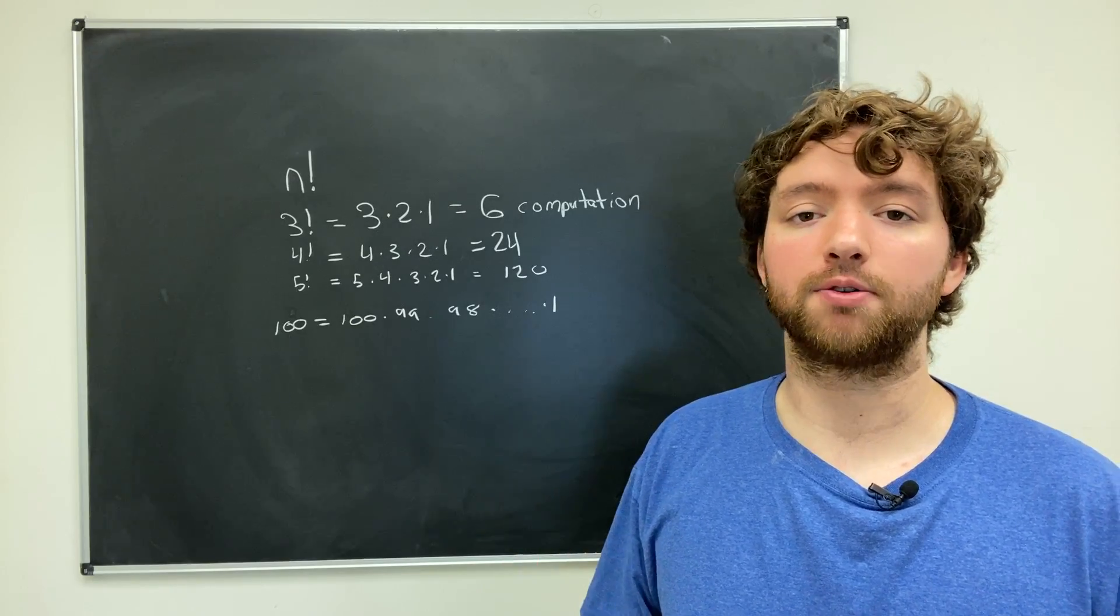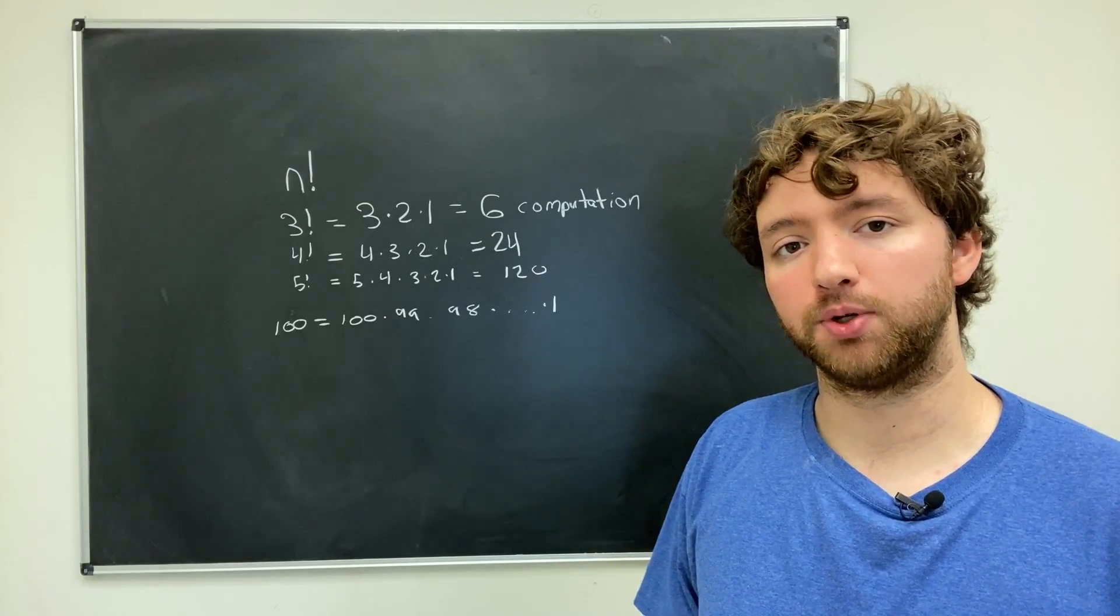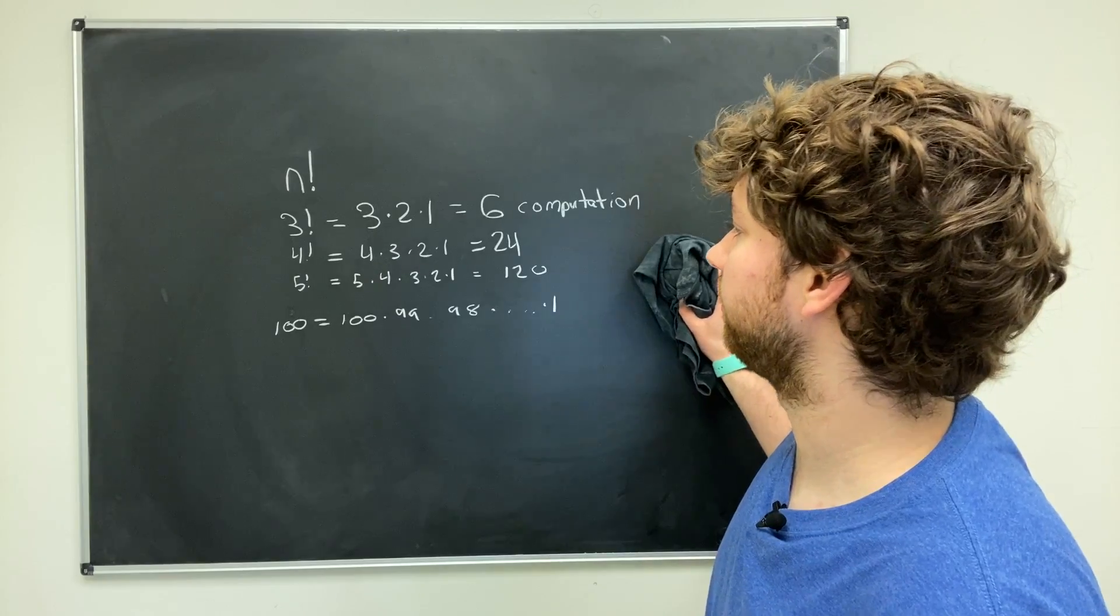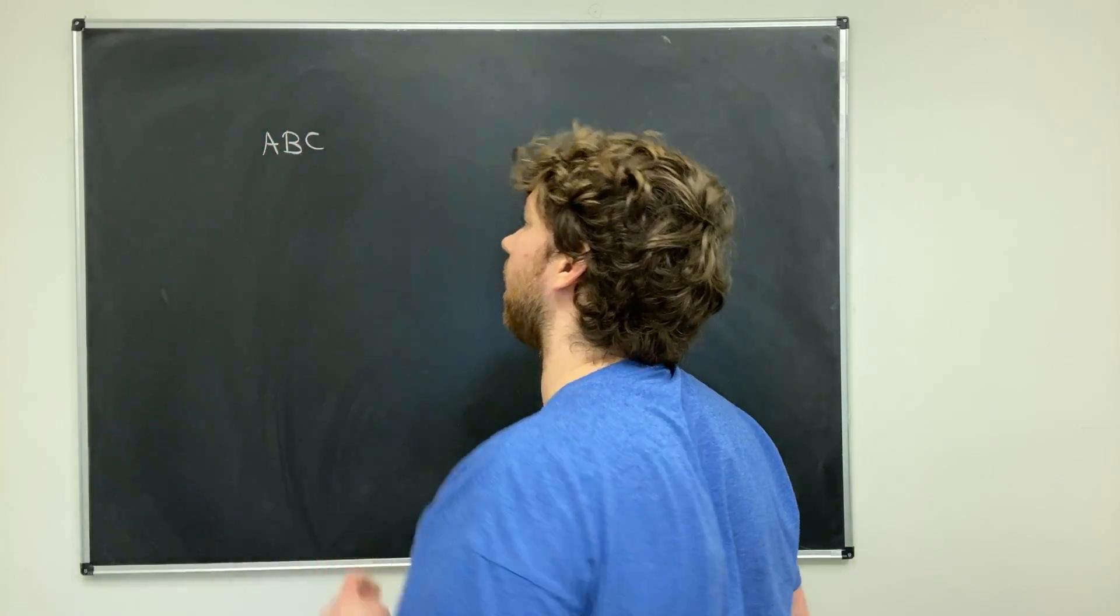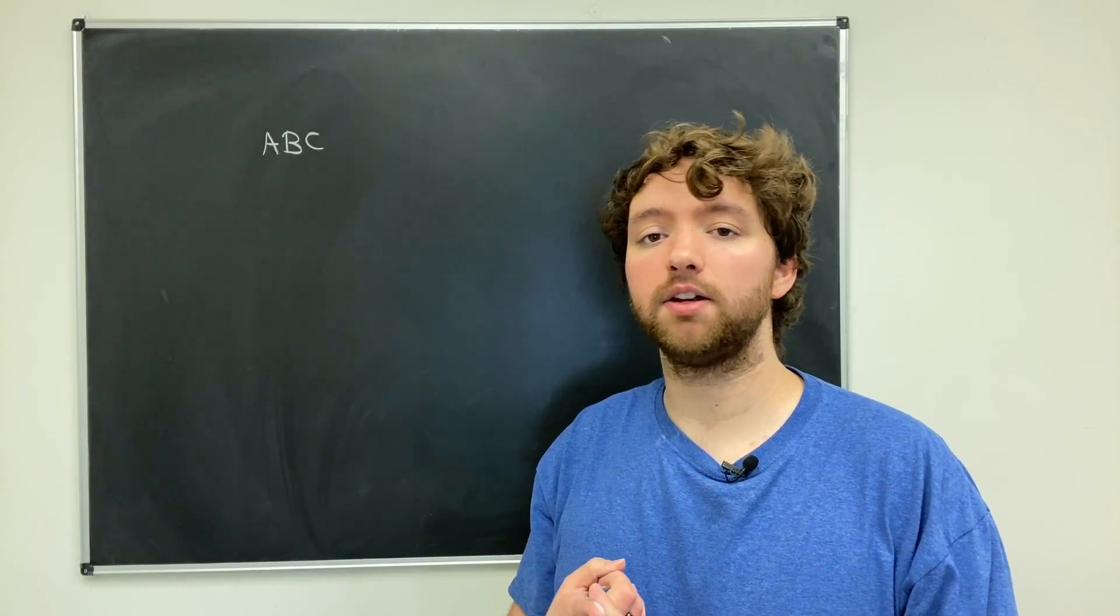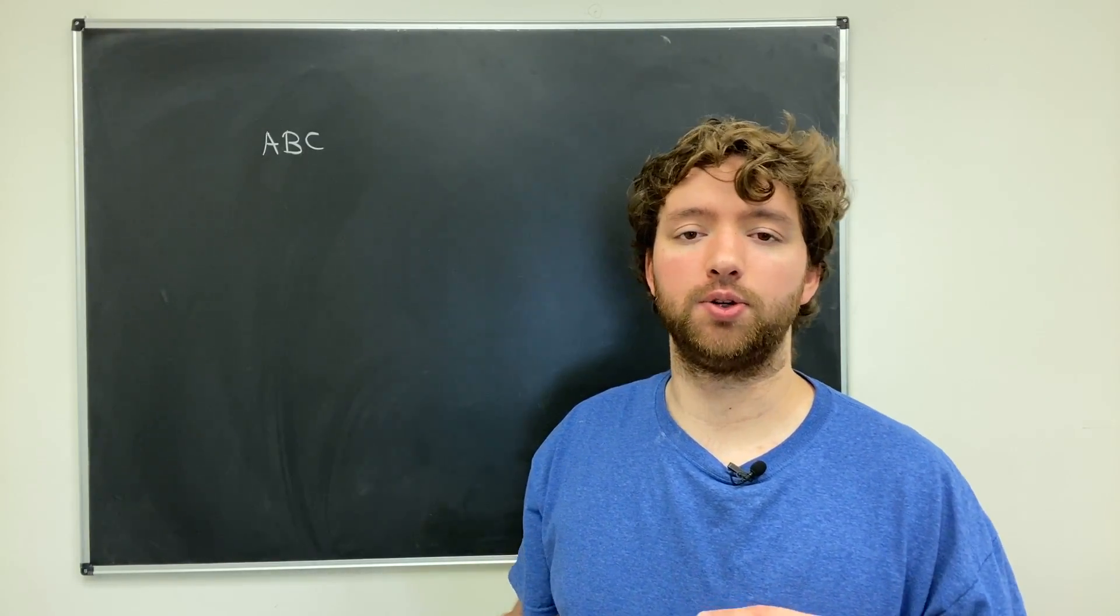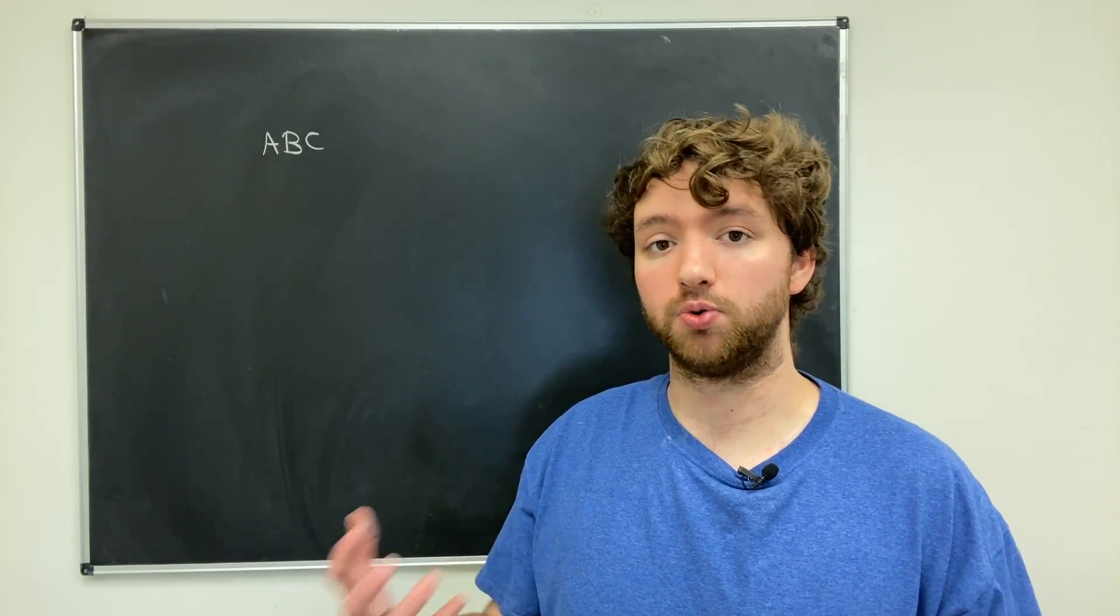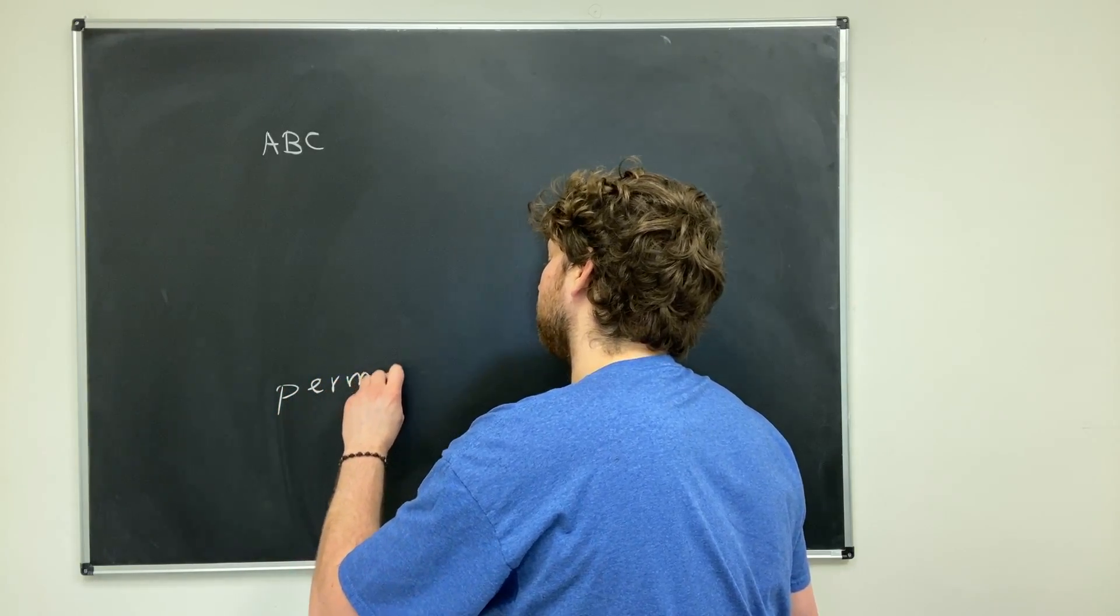But for now, I want to go through some concrete examples of what kind of algorithms would have an n factorial classification. So the first example is calculating all of the permutations for some input. So we're going to talk about what a permutation is and how to do it. So here's what the example is. So let's say I give you three letters. I want you to give me all possible arrangements of these letters, and you can't have any repeats, and you can't leave any out. So you can't have AAA, and you can't just have A by itself. Well, all of these different arrangements are known as permutations. So I'm going to write that out for you guys, permutations.